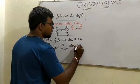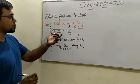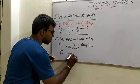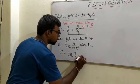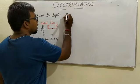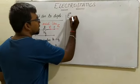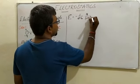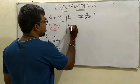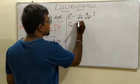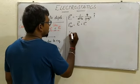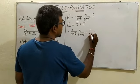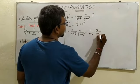This is along BC. So E-plus vector equals (1/4πε₀) · q/(r − a)² · p̂. Similarly, the field due to the negative charge is E-minus vector equals minus (1/4πε₀) · q/(r + a)² · p̂. So the total electric field equals (1/4πε₀) · q · [1/(r − a)² − 1/(r + a)²].